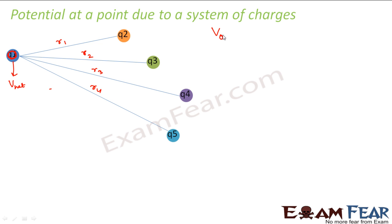So potential at point O due to the charge Q2 becomes what? It is similar to the potential due to a point charge. So this becomes KQ by R. So Q is Q2 here. So it is KQ2 by R2.